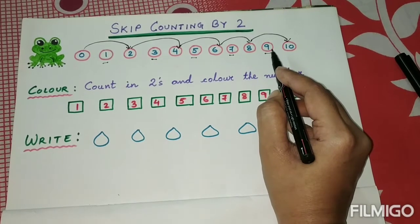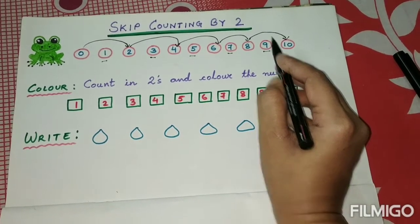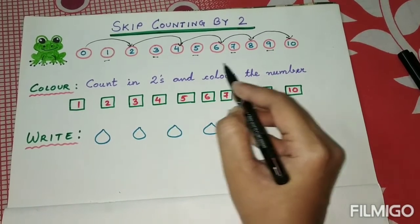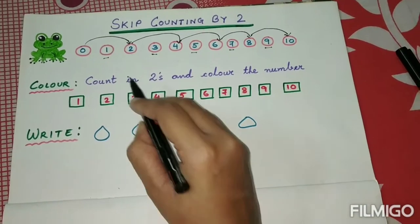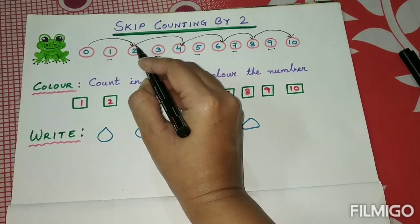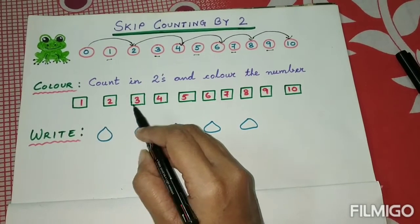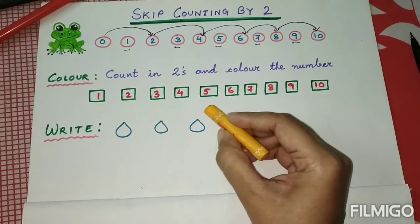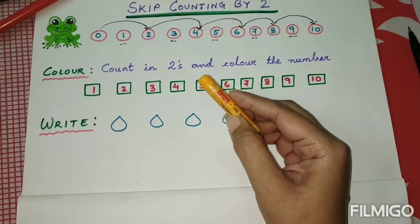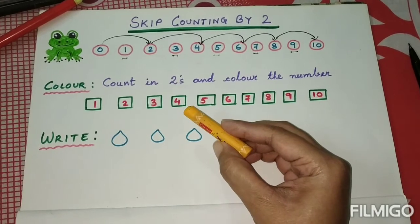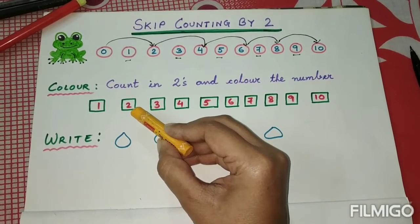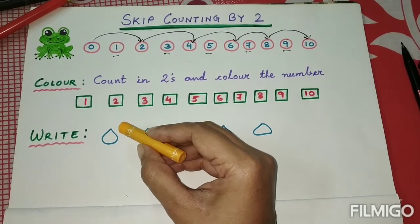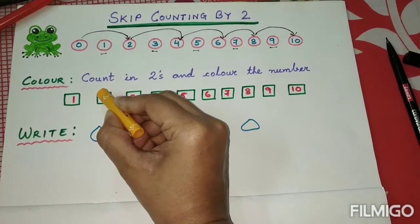Now the next part: count in twos and color the numbers. Here we will color the same boxes we have shown. I have taken yellow color. We are going to color the numbers for skip counting by two. The first number we will skip count by two is number two — let us color it.